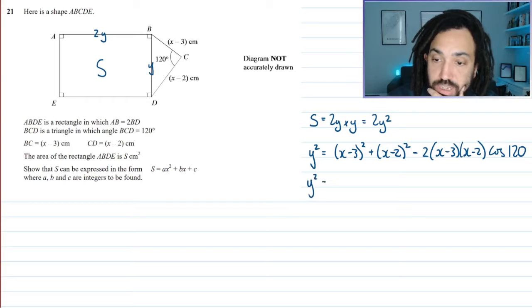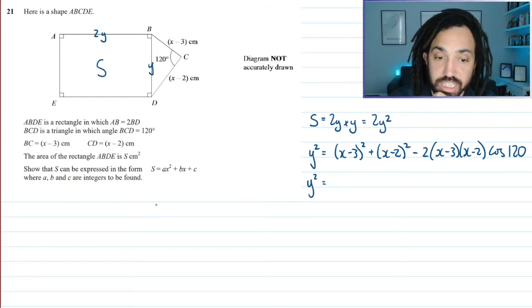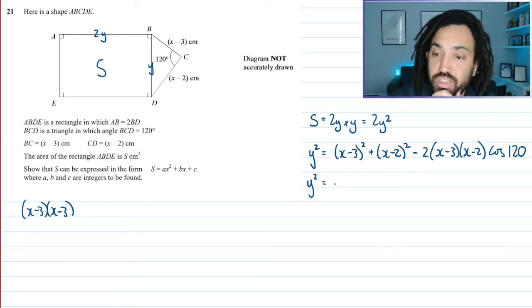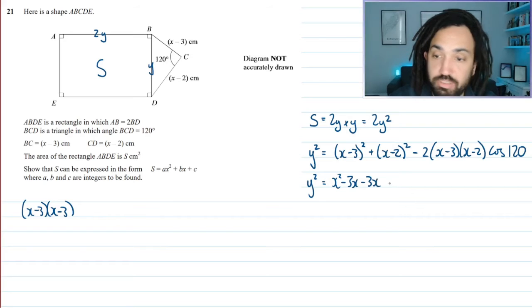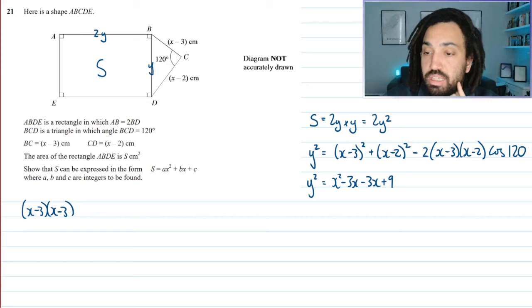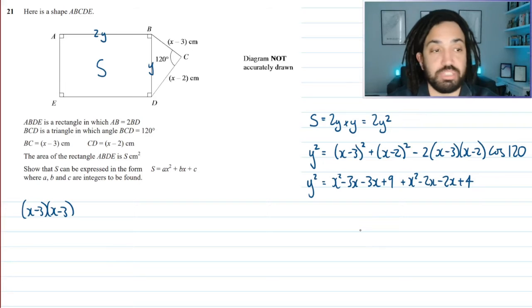So Y squared is equal to, when I expand these brackets, this is a double bracket, so I'd have to do X minus 3, X minus 3. This would give me X squared, it would give me a minus 3X, it would give me another minus 3X, and it would give me a plus 9. Okay, this next one, again, I'd have to do a double bracket here, so I'd get X squared minus 2X minus 2X plus 4. I expanded that one.